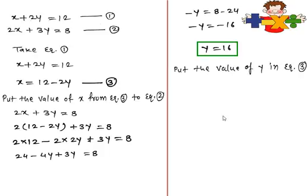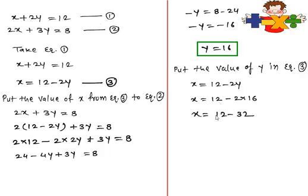Now put this value of y in equation 3. Equation 3 is x is equal to 12 minus 2y. In place of y we write 16, so x is equal to 12 minus 2 into 16. Two times 16 is 32, so x is equal to 12 minus 32, which gives x is equal to minus 20. This is how we find the values of x and y using the substitution method.